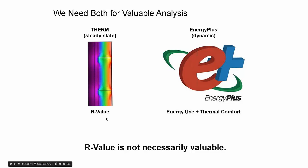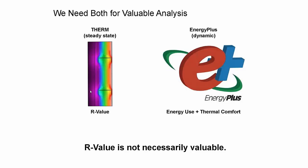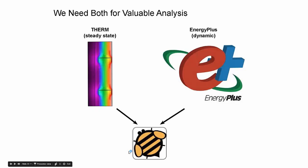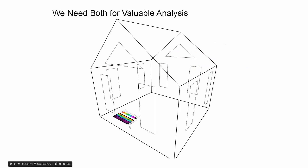Honeybee connects these two in one solid workflow all within Grasshopper, making it easier to walk between the two worlds rather than having two separate interfaces. R-value isn't necessarily the true value - true value is things like energy savings or increases in occupant comfort, things we can readily recognize as valuable. R-value is a second-order abstraction. By the end of next session, we're going to be plugging the results we get from Therm into EnergyPlus simulations.